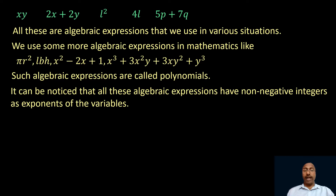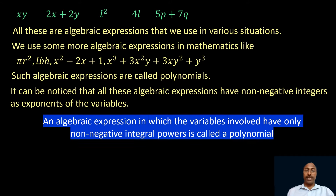All these algebraic expressions have non-negative integers as exponents of the variables. In πr square, the exponent of r is 2. In LBH, the exponent of L, B, and H are each 1. In xy, the exponent of x and y are each 1. An algebraic expression in which the variables involved have only non-negative integral powers is called a polynomial.